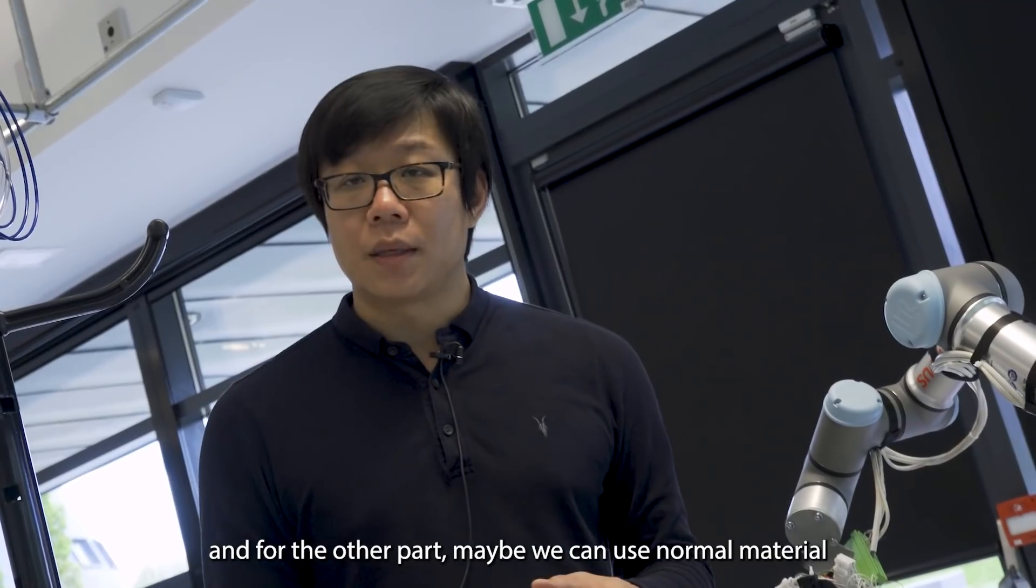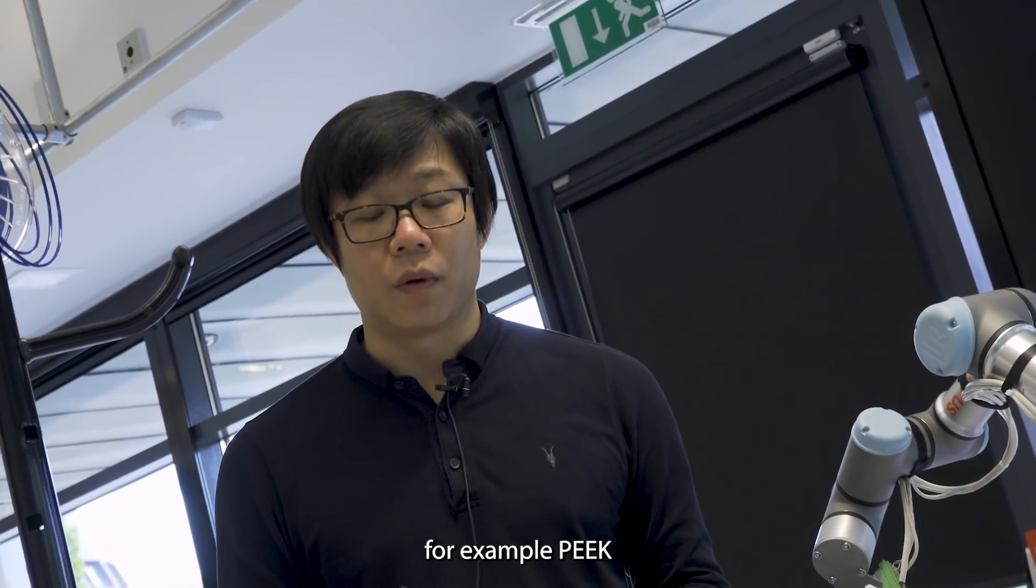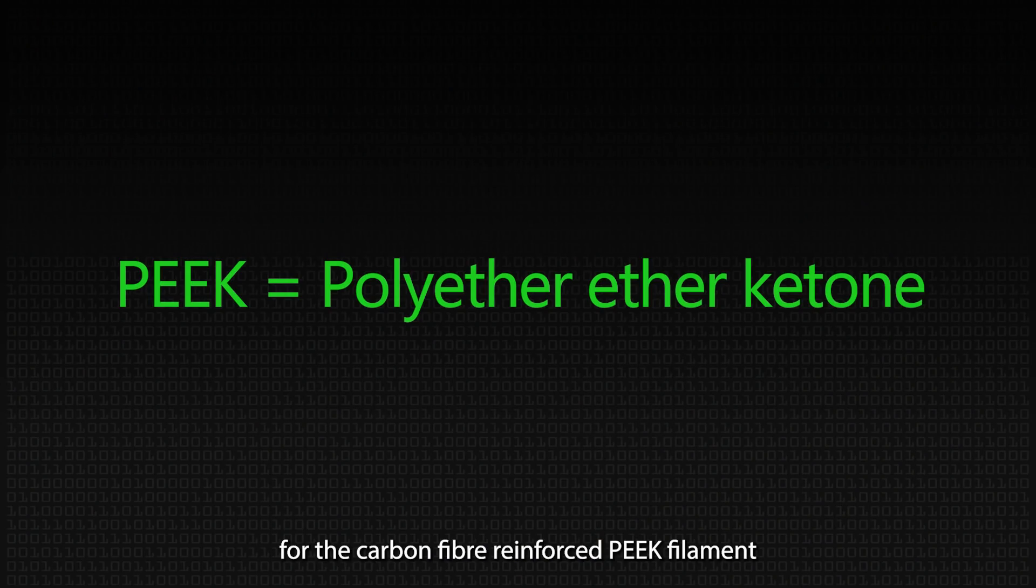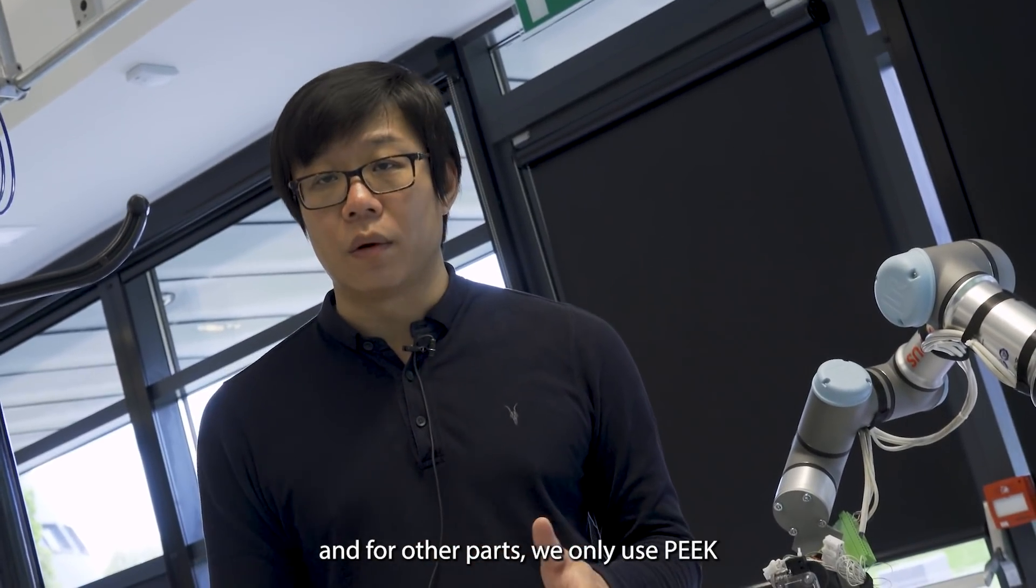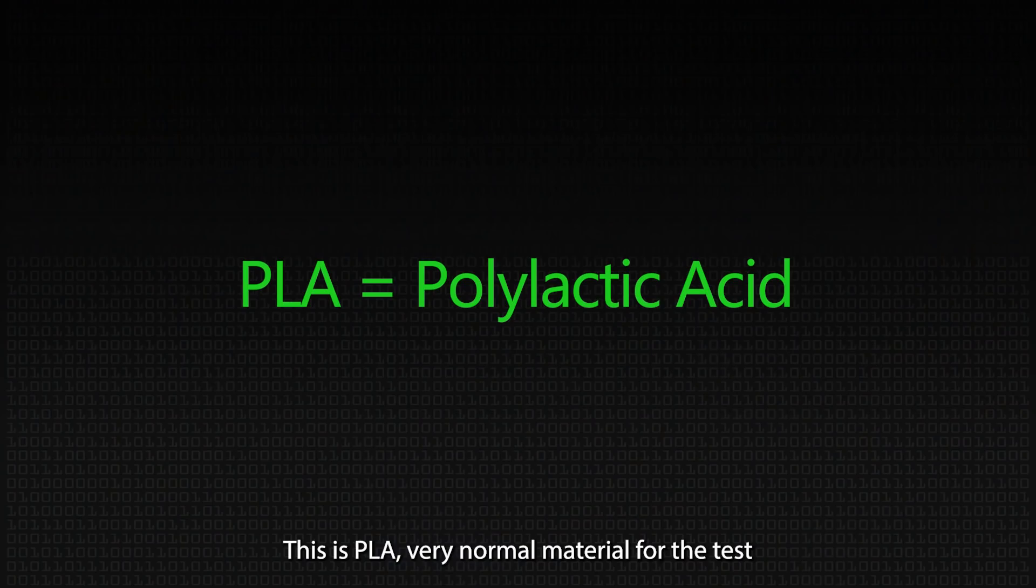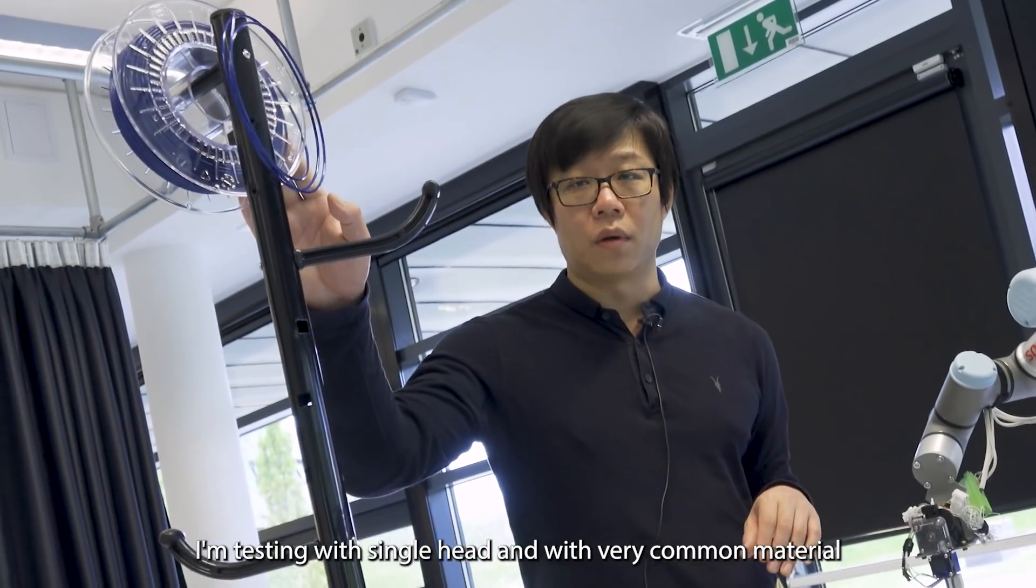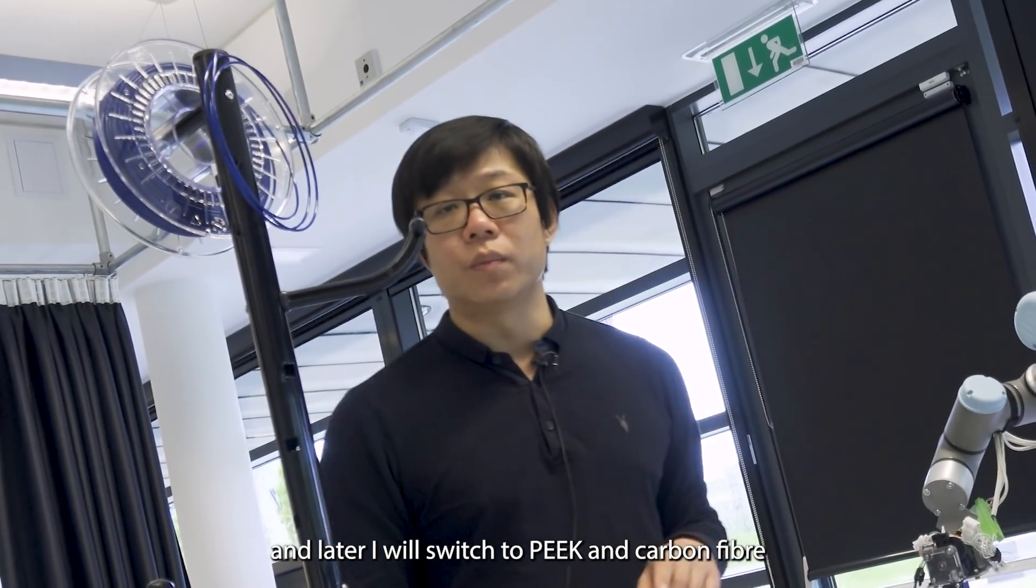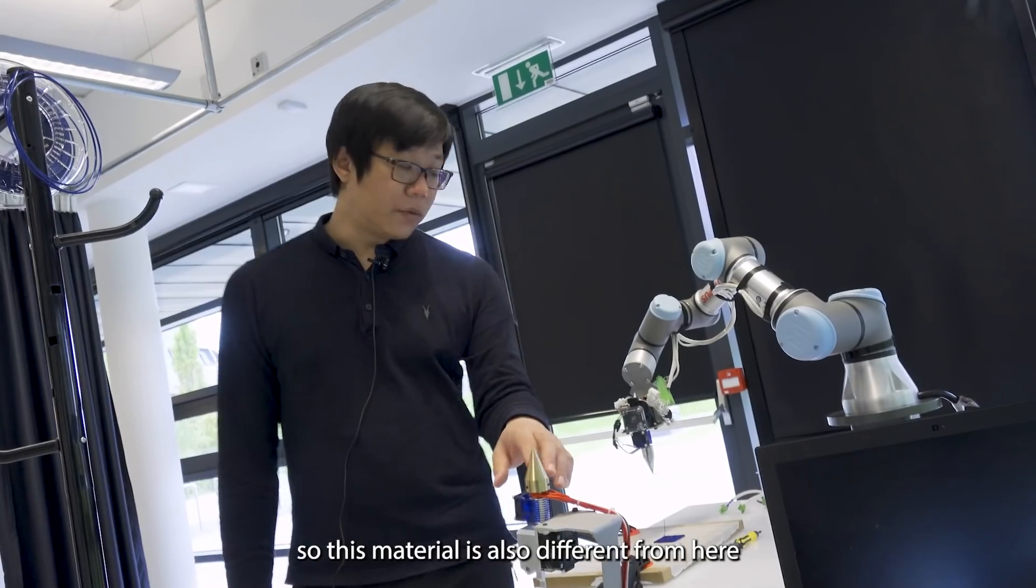And for the other part, maybe we can use normal material, for example, PEEK. For the carbon fiber reinforced PEEK filament, that is quite strong, but it's quite expensive. And for other parts, we only use PEEK. This is PLA, very normal material for the test. I'm testing with single head and with very common material, and later I will switch to PEEK and carbon fiber.